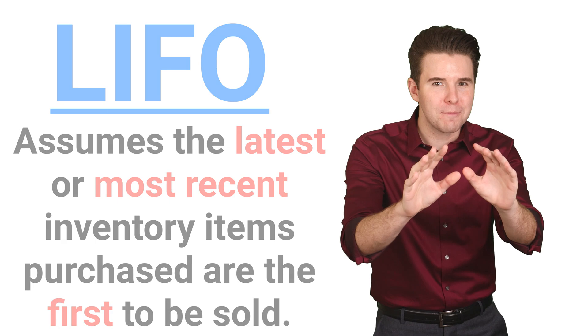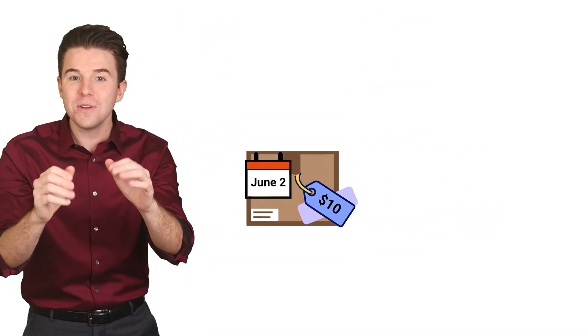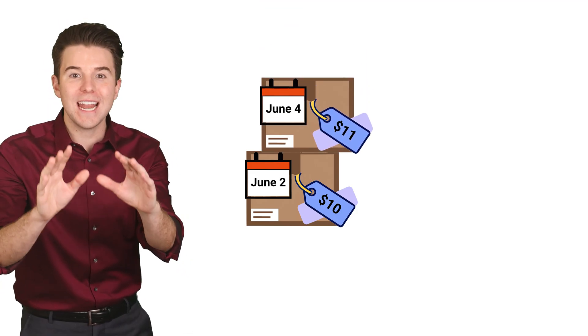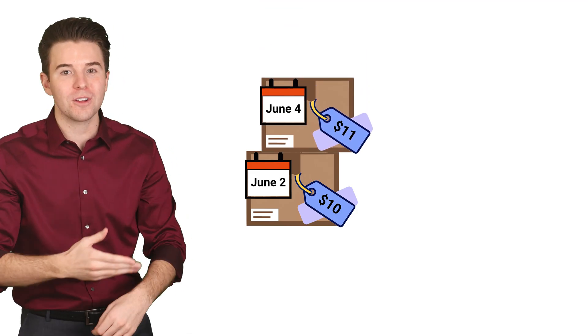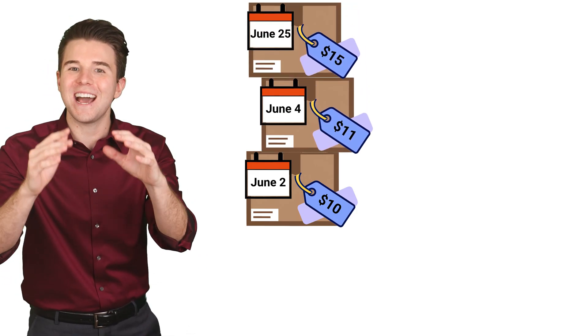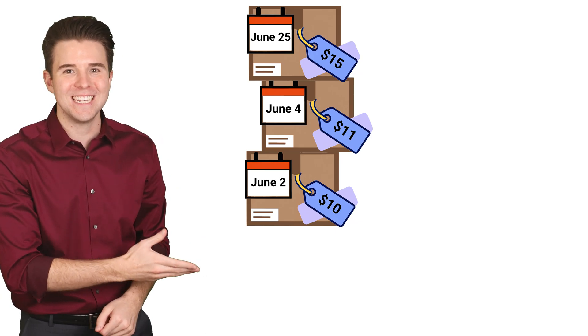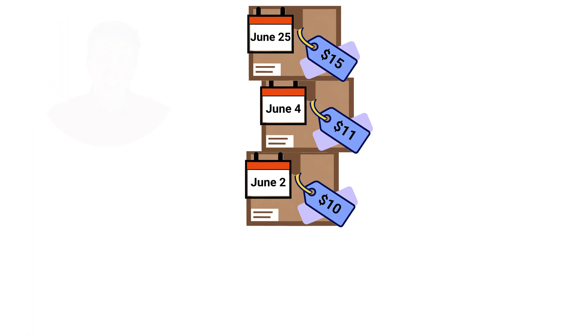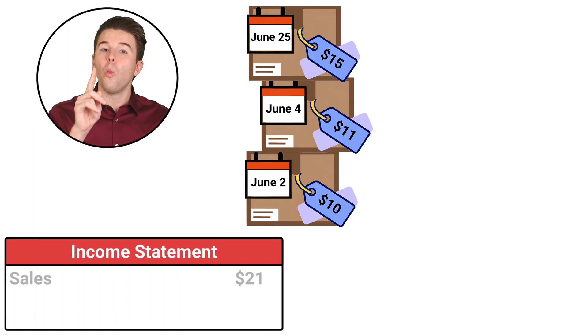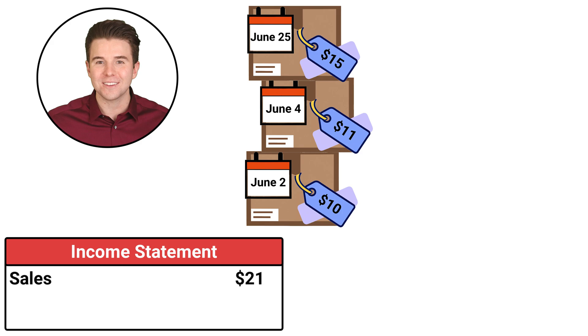For example, let's say a company bought three identical units of inventory: one unit on June 2nd for $10, one unit on the 4th for $11, and one unit on the 25th for $15. On June 28th, we sold one unit for $21.